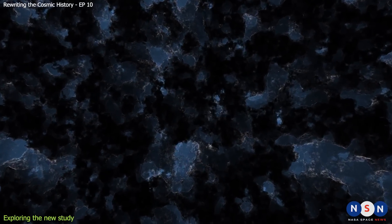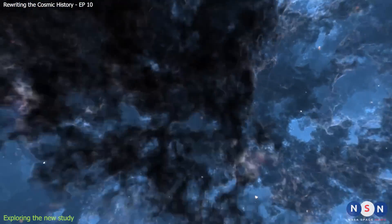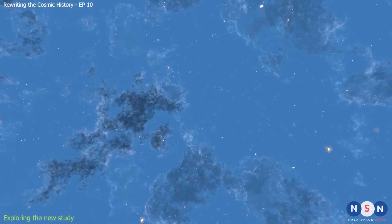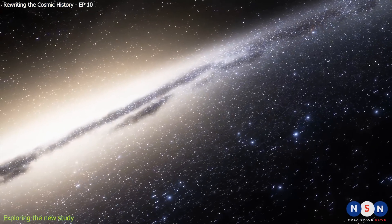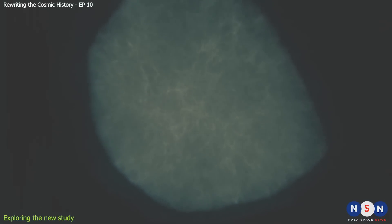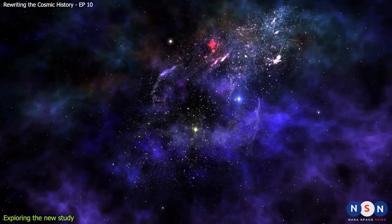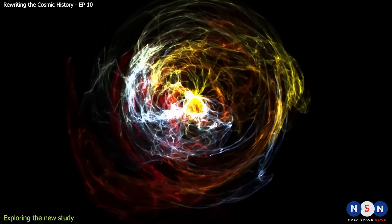This feedback can be either from stellar winds or from supernovae. The new model suggests that in the early universe there was a window of opportunity for starbursts to occur without feedback. This window was opened by two factors: low metallicity and high density. Metallicity is a measure of how much heavy elements such as carbon, oxygen, and iron are present in the gas. Heavy elements are produced by stars and supernovae, and they affect the cooling and heating of the gas. In the early universe the metallicity was very low because there were not many stars or supernovae yet. This means that the gas could cool more efficiently and form stars more easily.